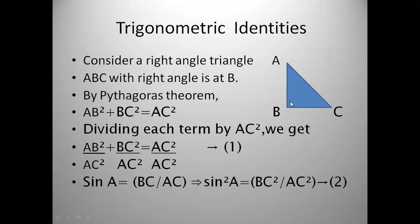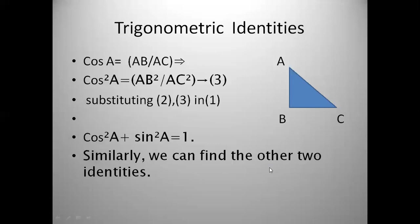With respect to angle A, sine A is opposite over hypotenuse, that means BC/AC. So sine A whole square, which is sin²A, equals BC²/AC². This is equation two. Now, cos A with respect to angle A is adjacent over hypotenuse, that is AB/AC. So cos A whole square, cos²A, equals AB²/AC². This is equation three.